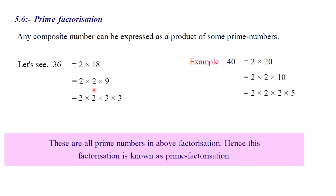We will write in composite number from this part. Here we will write the composite number 40. If we factorize 40, I will write it as 2 into 20. The next number, 2, I will write as a prime number. We will write 2 into 10. Okay, 2 into 10.